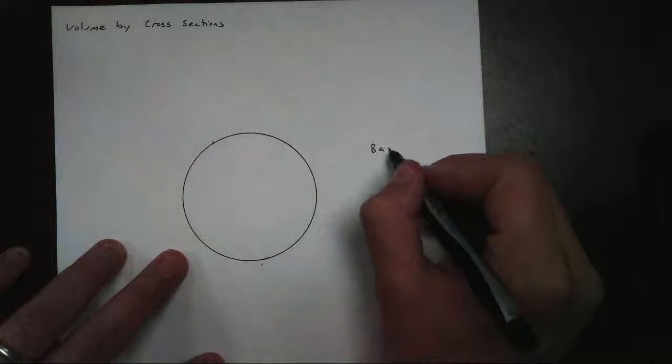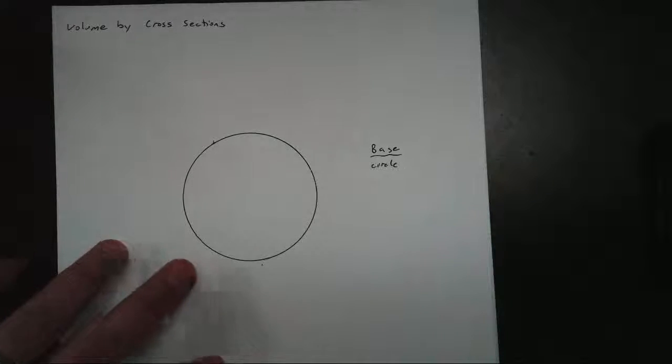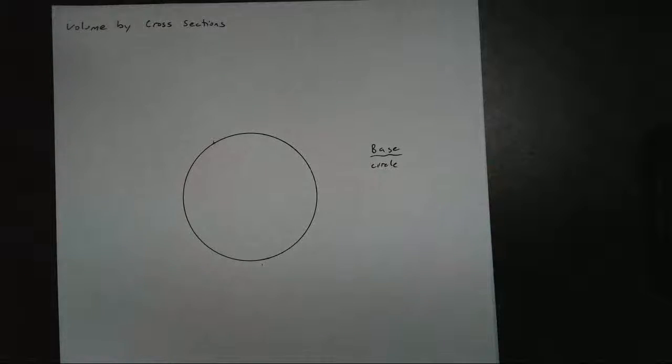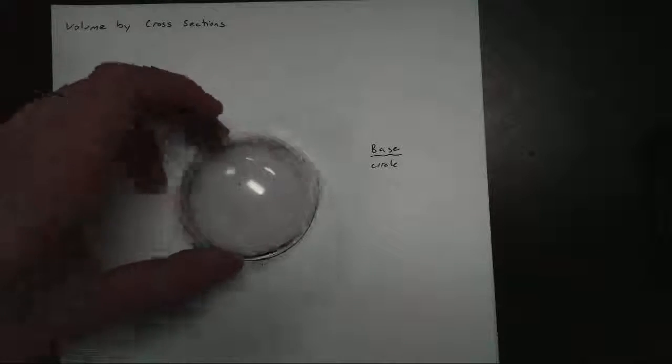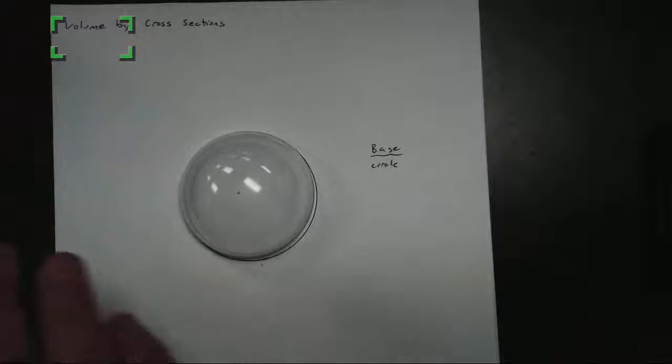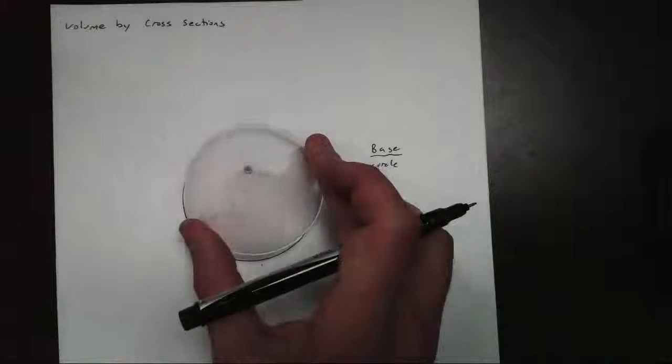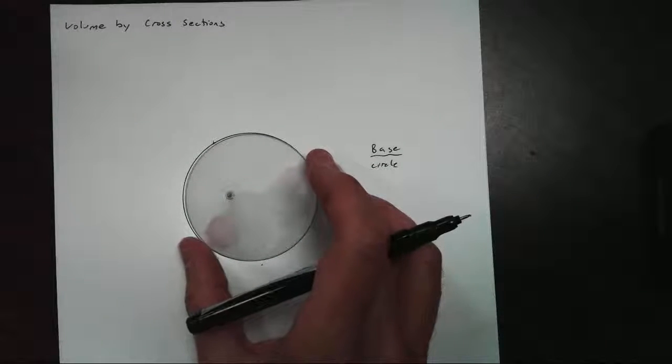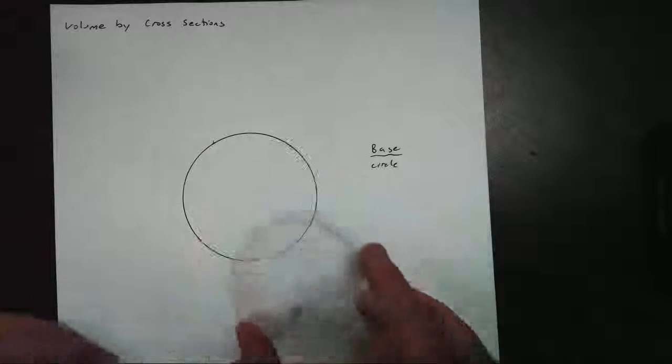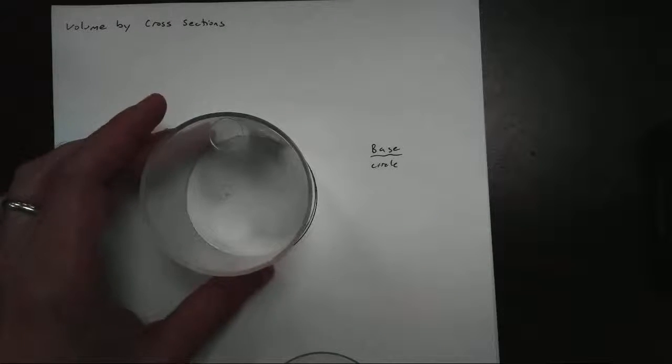Notice in this case, our base is a circle. A lot of different volumes or three-dimensional shapes have a circle for a base. For example, a hemisphere has a circular base. We have other shapes that have a circular base. A cone, for instance, has a circular base. We also have cylinders that have a circular base.